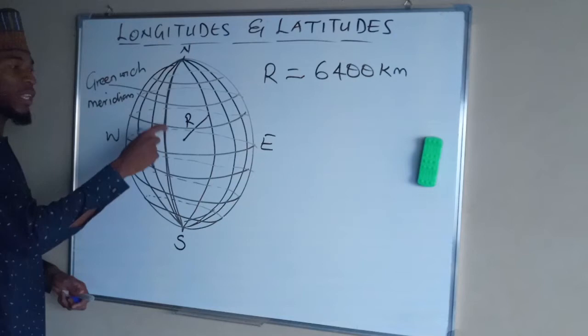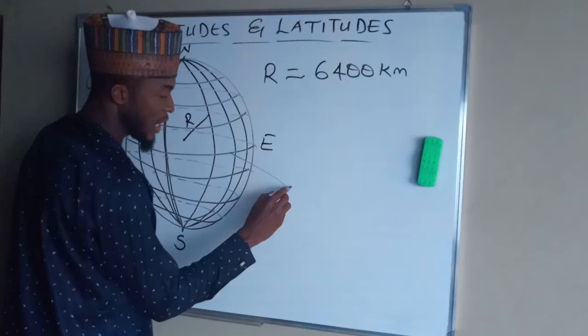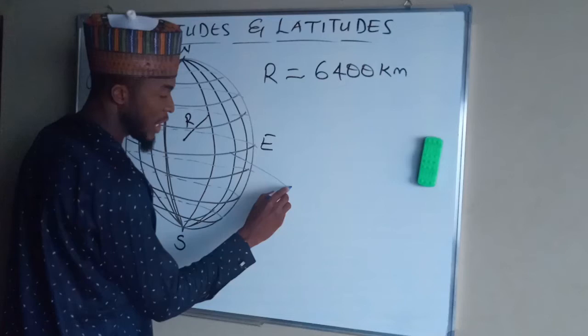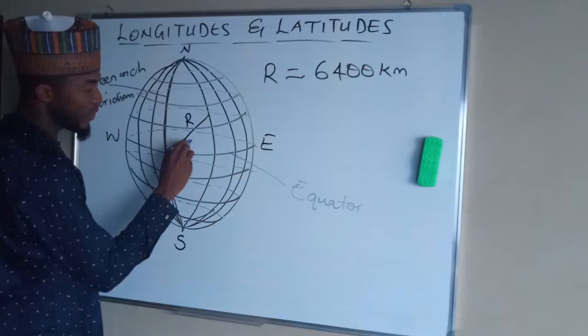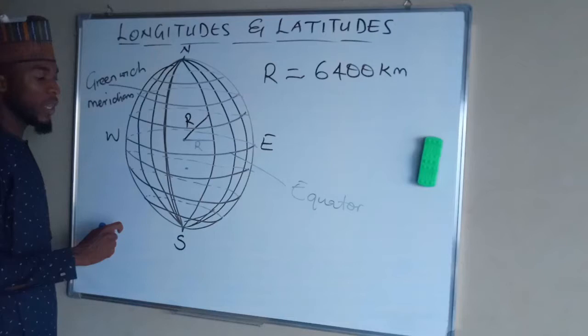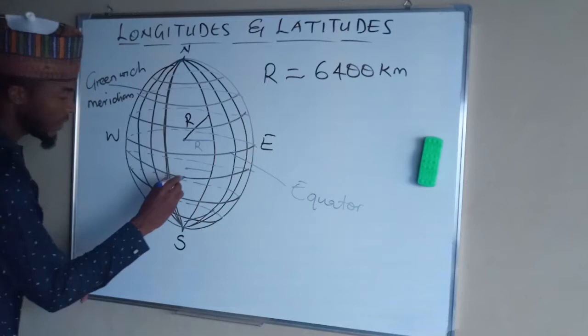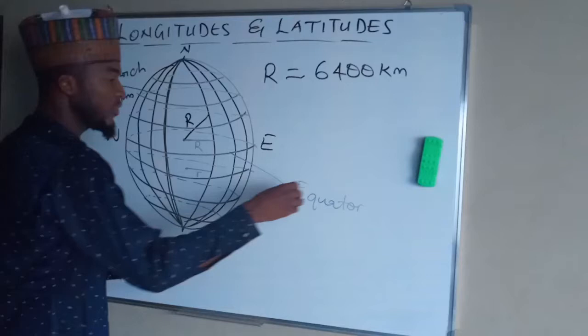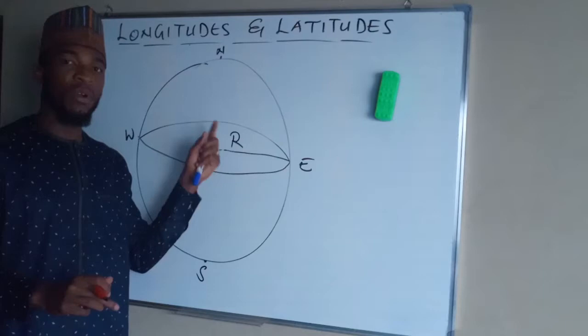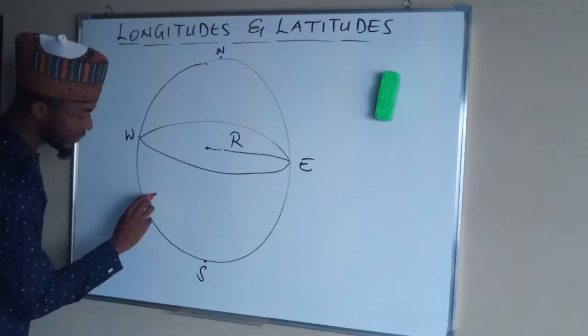The relationship between longitudes and latitudes is that there is a great circle called the equator. It is only the equator that has equal radius with the longitudes. But all other latitudes have a smaller radius compared to the equator. The equator has a radius equal to the radius of the Earth, which is 6400 kilometers.